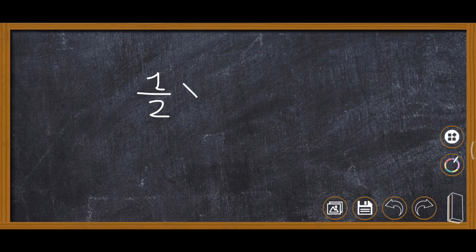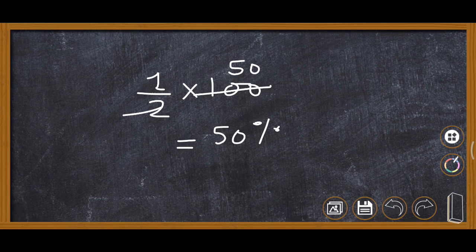we write 1 upon 2 multiplied by 100. When we cut 100 by 2, it is 50. So the answer is 50 percent.